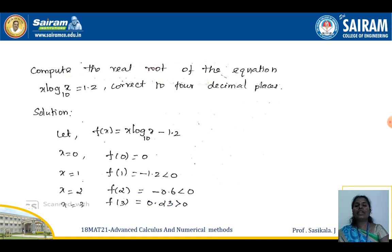The first example: compute the real root of the equation x·log₁₀(x) = 1.2, correct to 4 decimal places. The question gives the function but it is not in f(x) = 0 format, so we take 1.2 to the left side, giving f(x) = x·log₁₀(x) − 1.2 = 0.